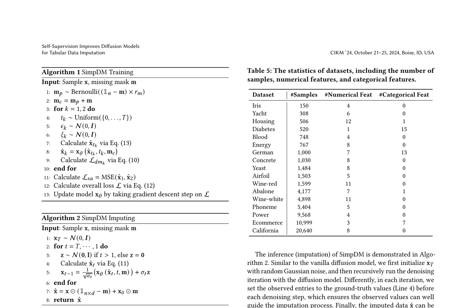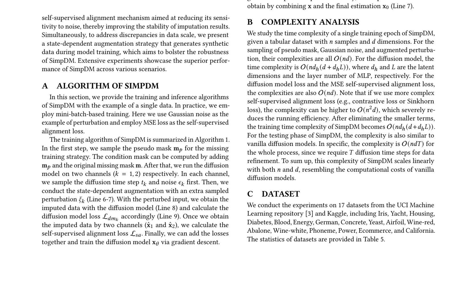SIMP-DM, a self-supervised diffusion model, is proposed for tabular data imputation, aiming to mitigate noise sensitivity and enhance imputation stability. The training procedure involves sampling a pseudo-mask, running the diffusion model on two channels, and calculating the self-supervised alignment loss. During inference, the input is initialized with random Gaussian noise, and the denoising iteration is recursively applied using the diffusion model.